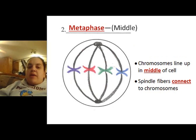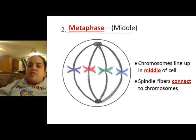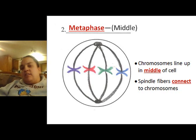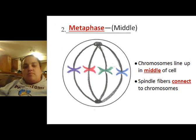Next we've got metaphase. Chromosomes line up in the middle of the cell, and spindle fibers connect to chromosomes. You should have metaphase written on the front part of the flap, and on the back it should say: chromosomes line up in the middle of the cell, spindle fibers connect to chromosomes.